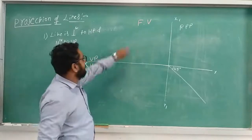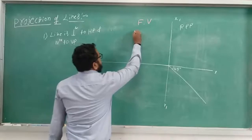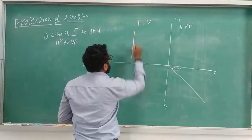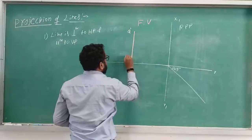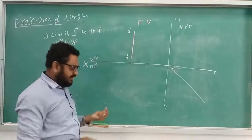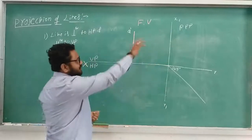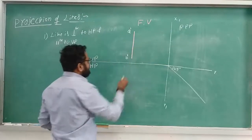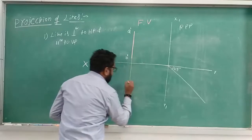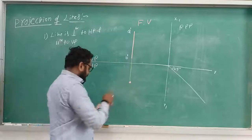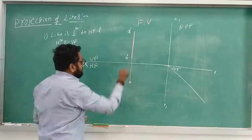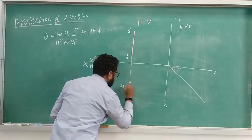Since the line is parallel to VP, in the front view we will get the true length. It looks like a straight line perpendicular to the XY line. You can name this point A-dash and that one B-dash — the naming is up to your wish, but the same naming pattern should be followed across all views. After finishing this, we draw a projection to get the top view, which appears as a dot or point. From the top, the top point is A-dash and B is hidden.